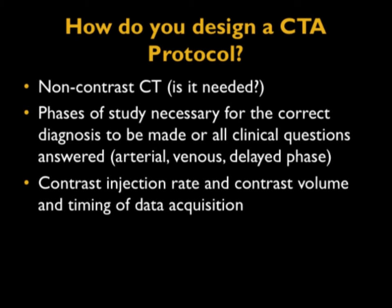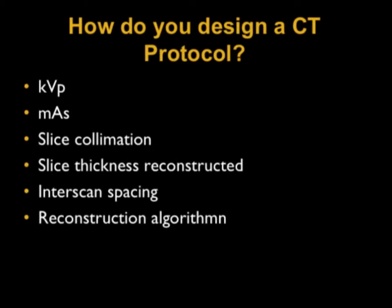You also need to know, when making protocols, what kind of contrast you're going to give — the volume, the timing, and delivery. You also need to know the parameters of your scanners. You have to make a protocol that's specific for each machine. If you have three different scanners, you need three different protocols. They will vary in KVP and MAS, slice collimation, slice thickness reconstructed, and scan spacing. We like 0.75 by 0.5, but everything from reconstruction algorithms will be variable depending on the scanner.